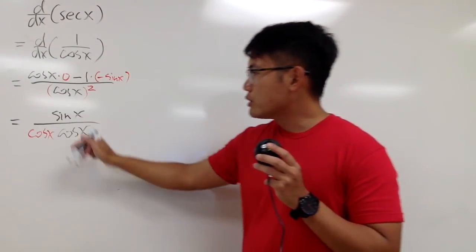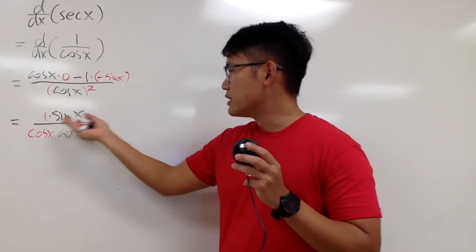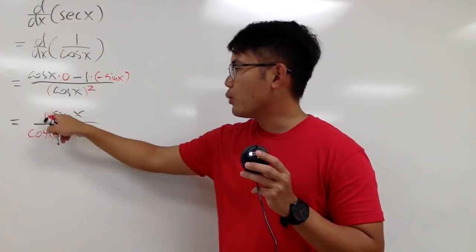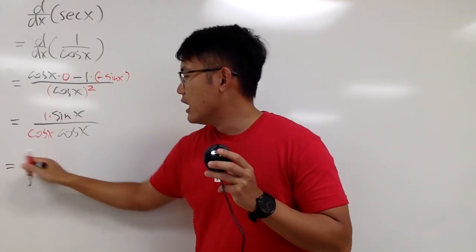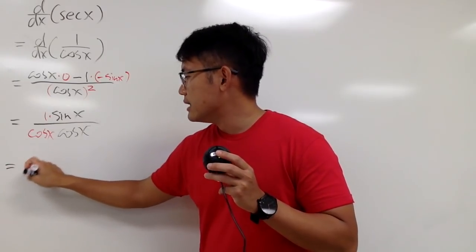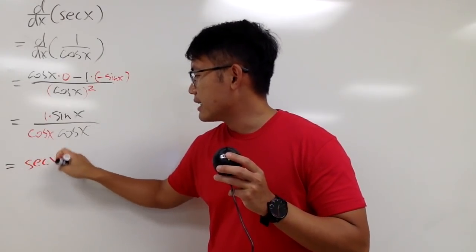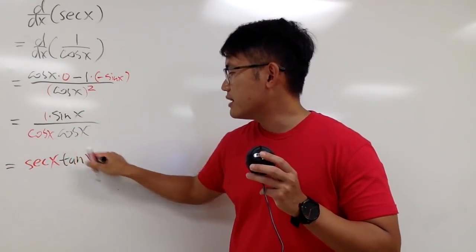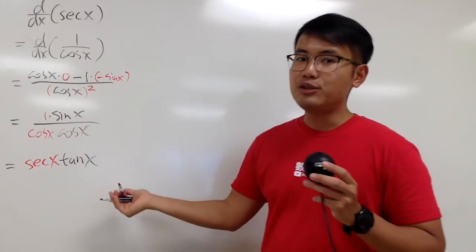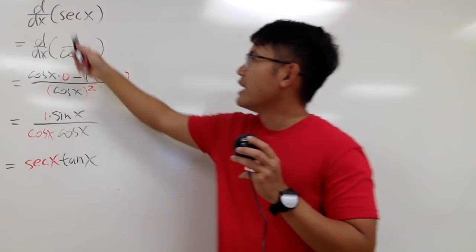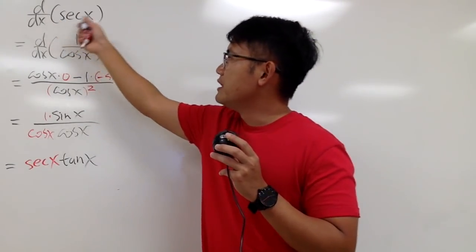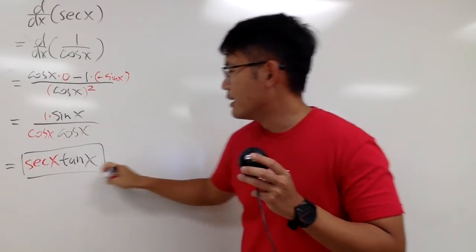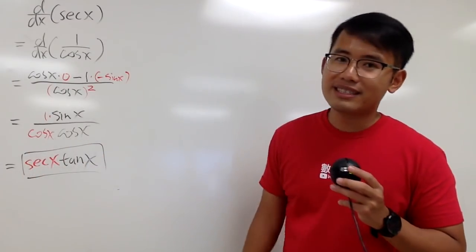Also, this is the same as saying 1 times sine x, so I can look at 1 over cosine as secant x. And this is, as we discussed, tangent x. So finally, we see that the derivative of secant x is just secant x times tangent x.